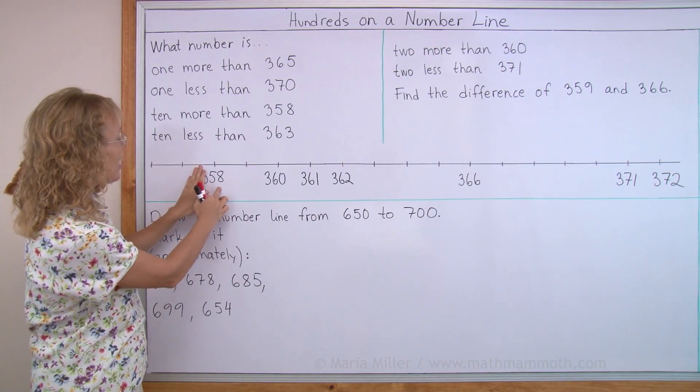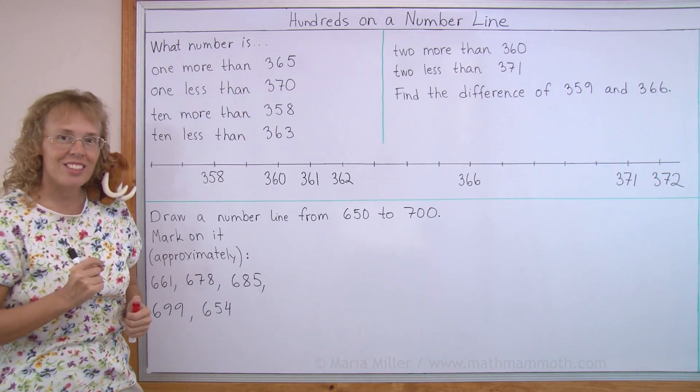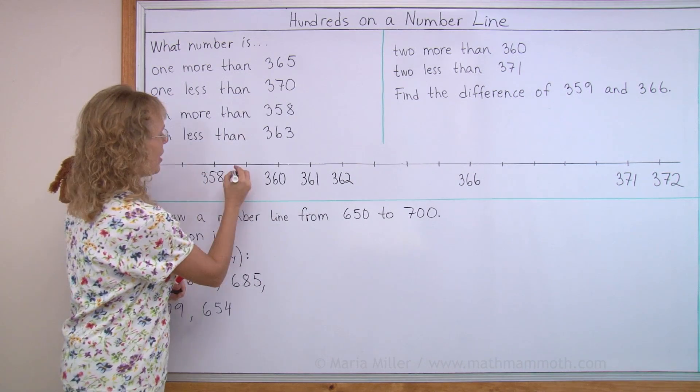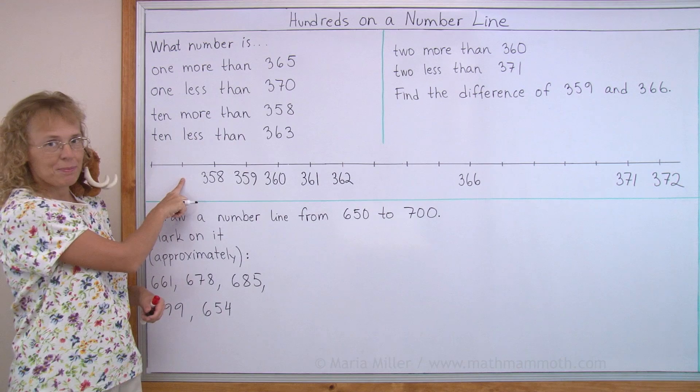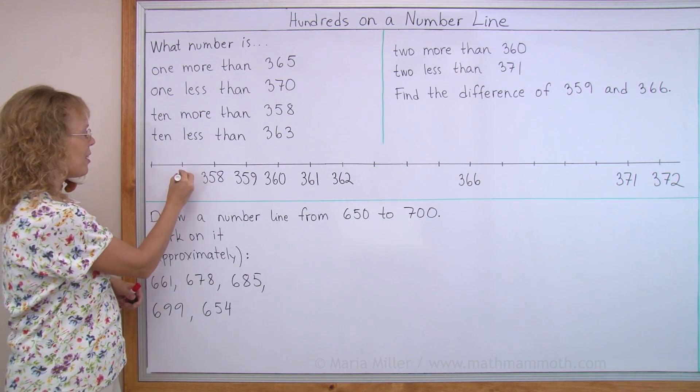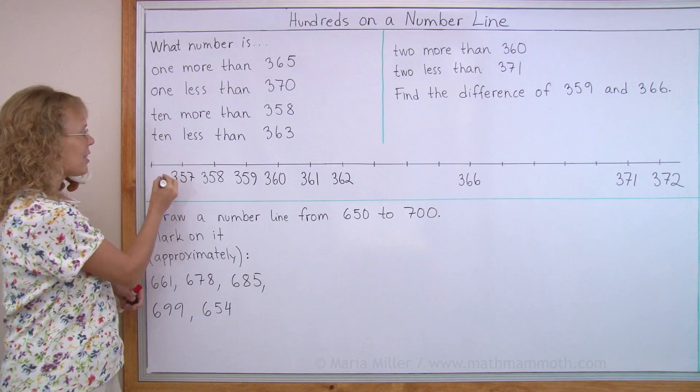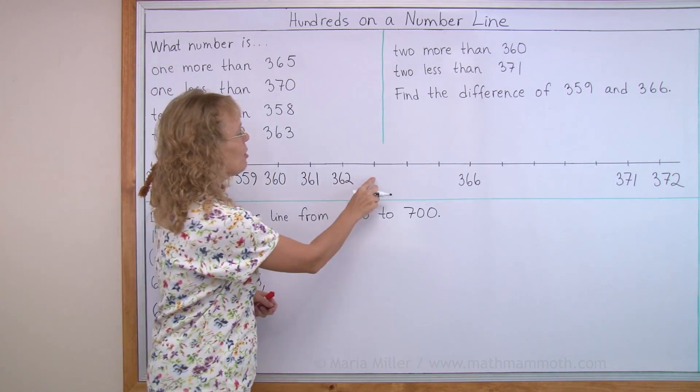So you know, after 58 would come 59, but we have the 300, so it is 359. What number would be here, before 358? Think of 58, before that would be 57. But it has the 300. And before that, 356.